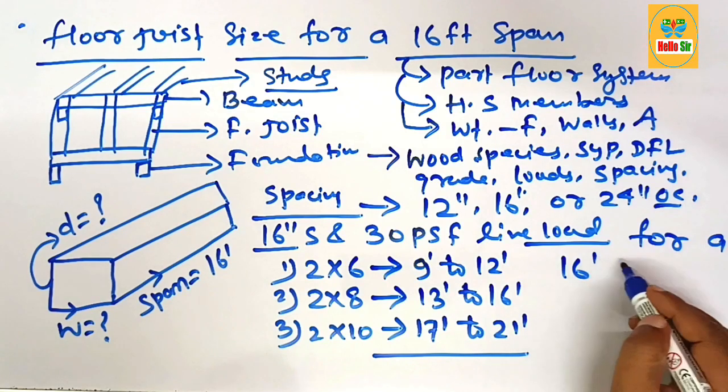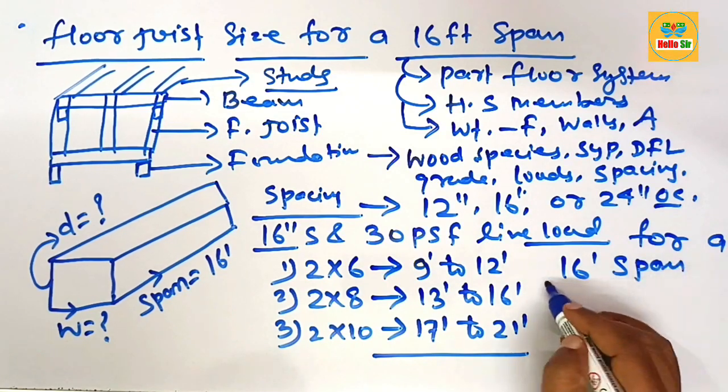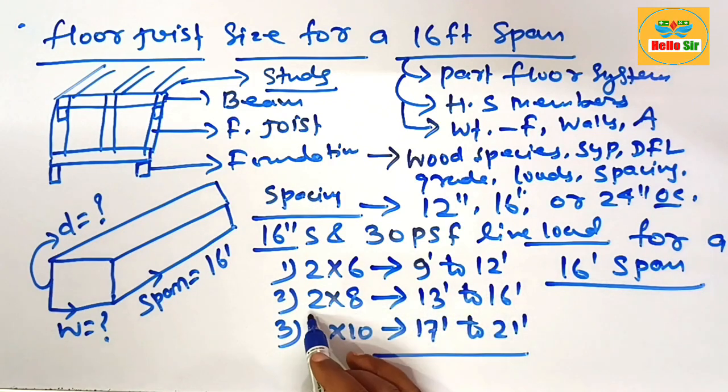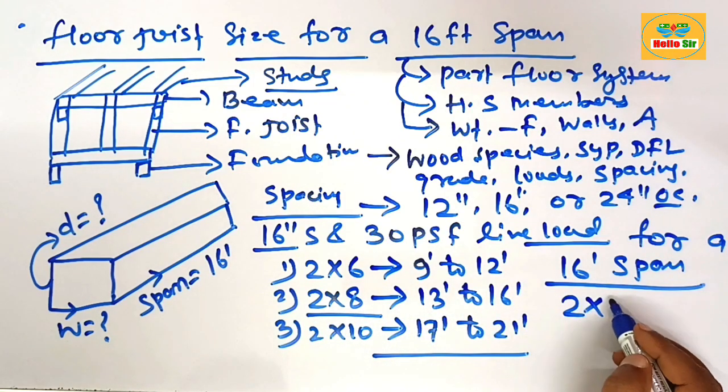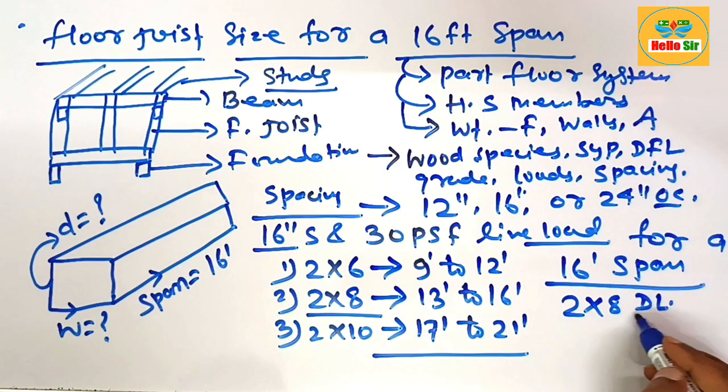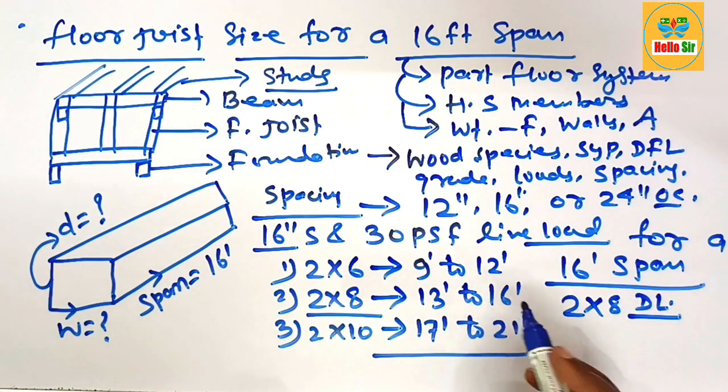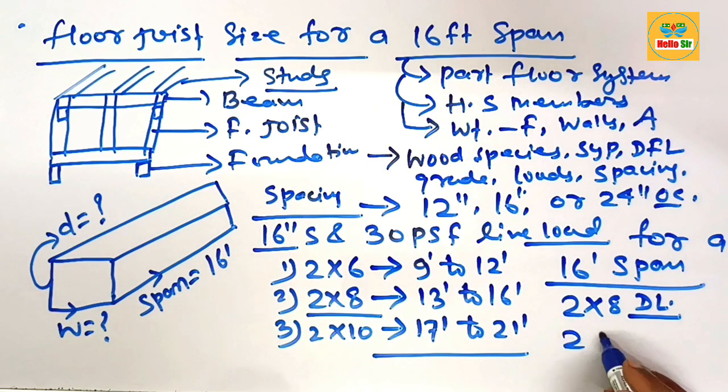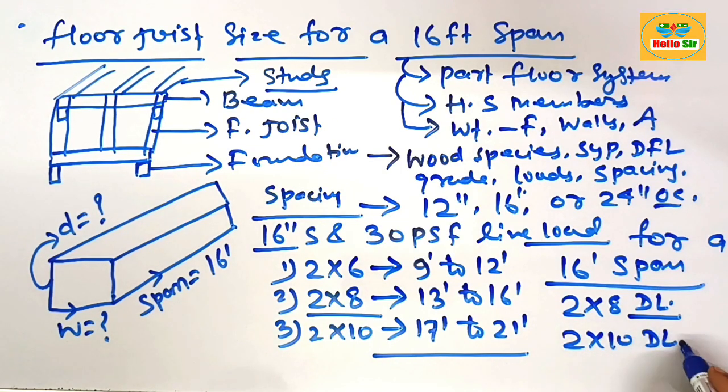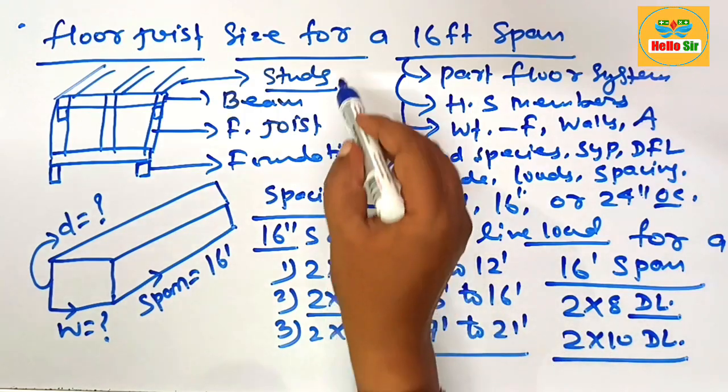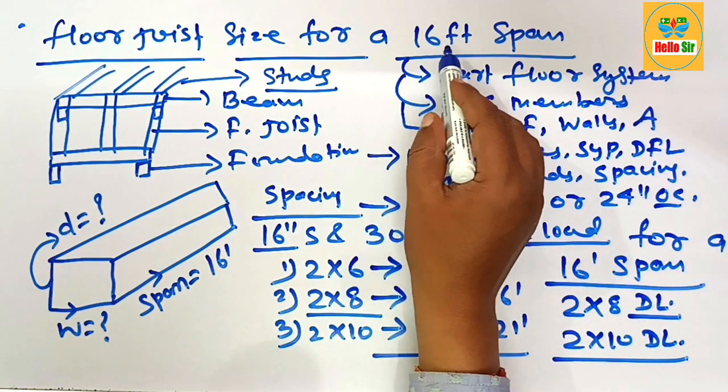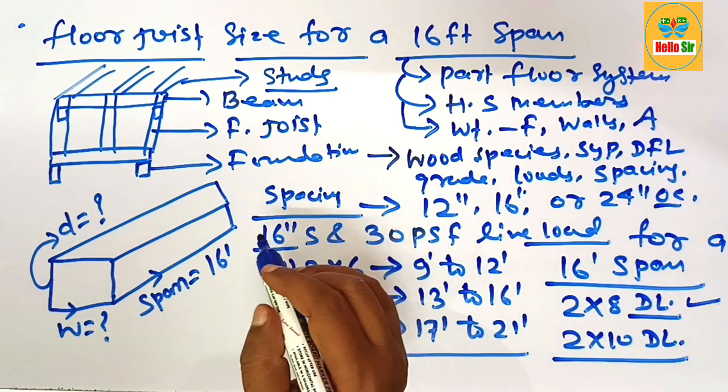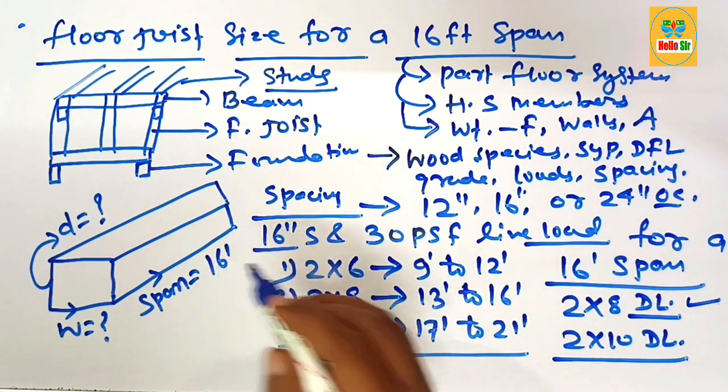For a 16-foot span, what will be the size of floor joist? First, 16 feet—select this one. It means you need 2x8 dimensional lumber, but for the sake of greater stability, 2x10 dimensional lumber are often used for the span length of 16 feet, although 2x8 is technically accepted.